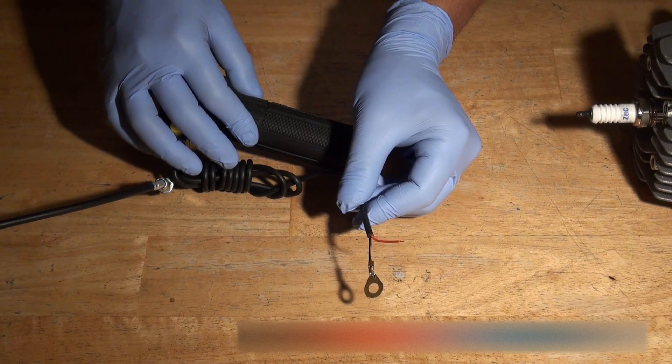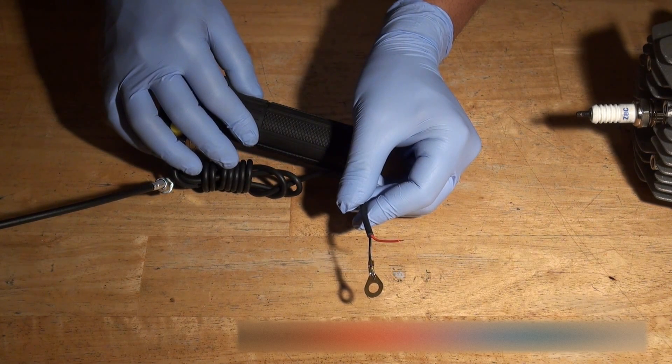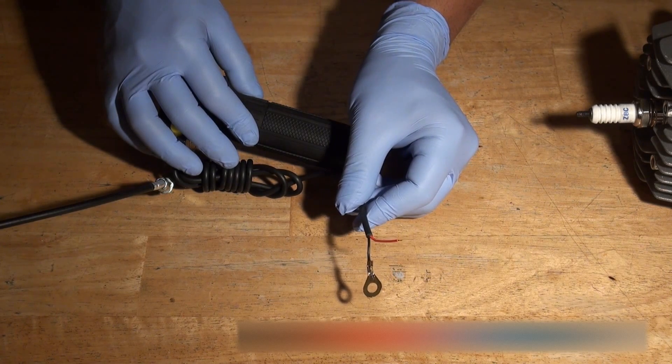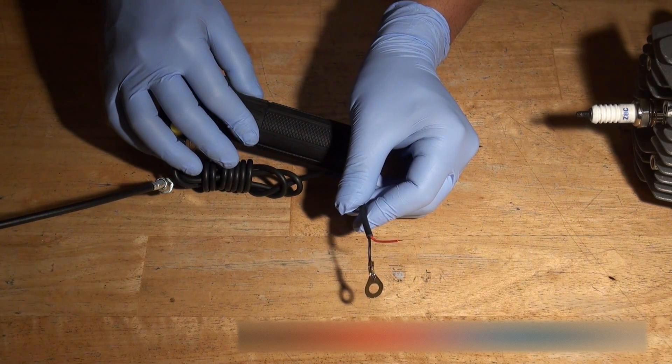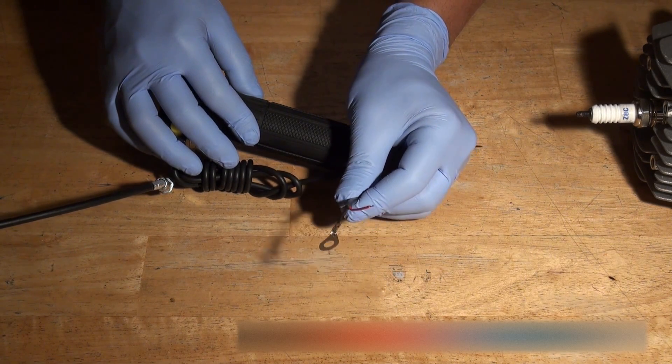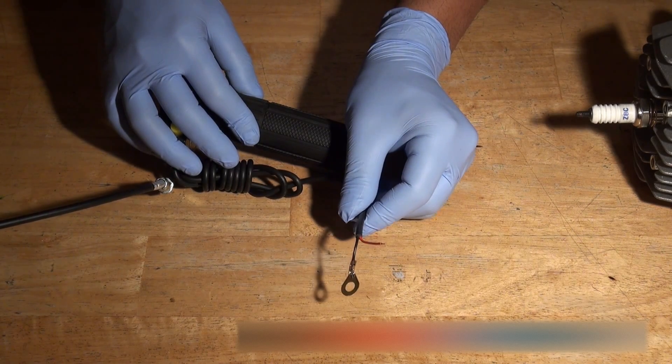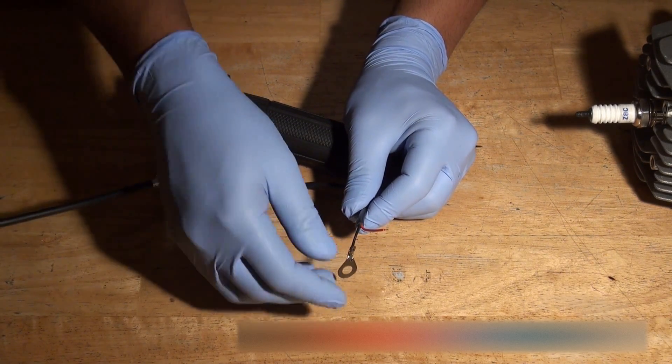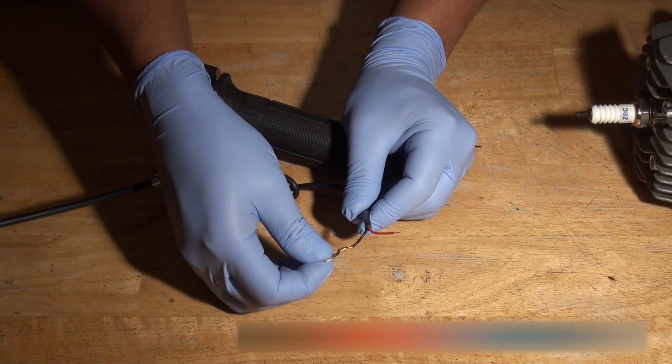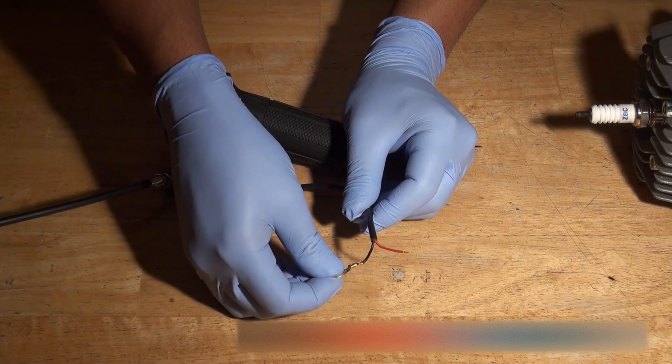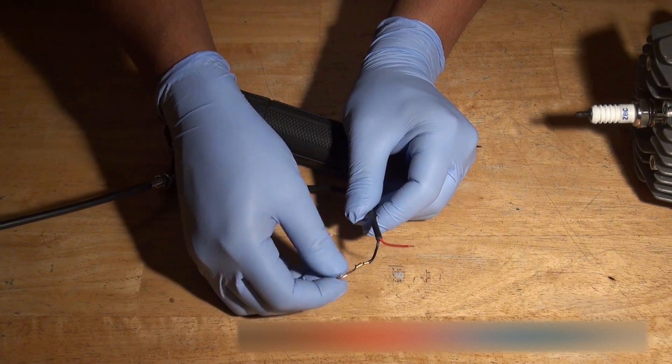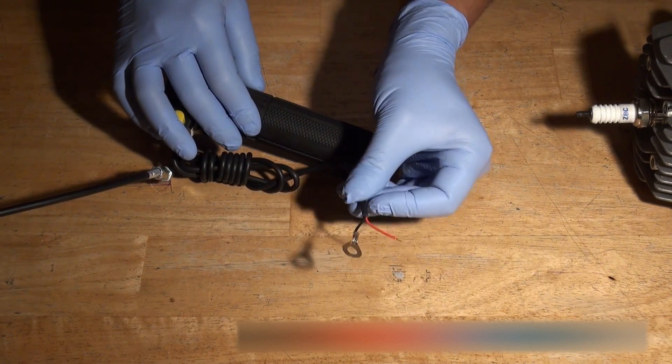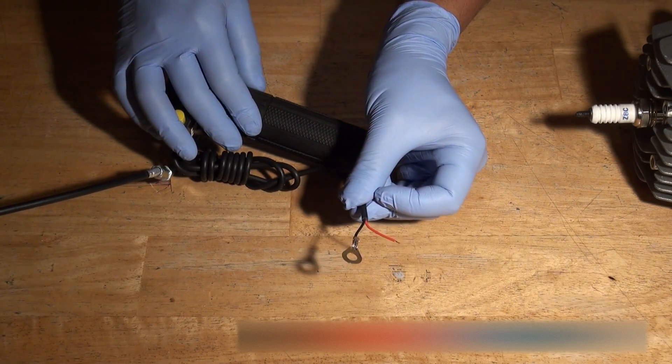The most common place to connect this is the screw for the bottle holder. So if you can imagine, you take the screw off that holds your bottle holder in place, you put the eyelet on there, and then you put the screw on top. So now this wire is grounded to the frame of your bicycle. Now you take the red wire and you connect it into the blue wire, and I'll show you exactly where to connect it.